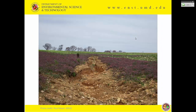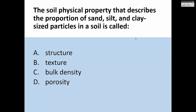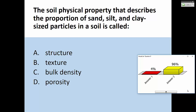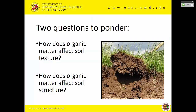Review: what is the soil physical property that describes the percent sand, silt, and clay? Most people said texture — yes, that's correct. Structure is something different; it describes how soil particles are arranged into aggregates. Texture is sand, silt, and clay. Also note: organic matter has nothing to do with texture. The organic matter is nowhere in that definition.